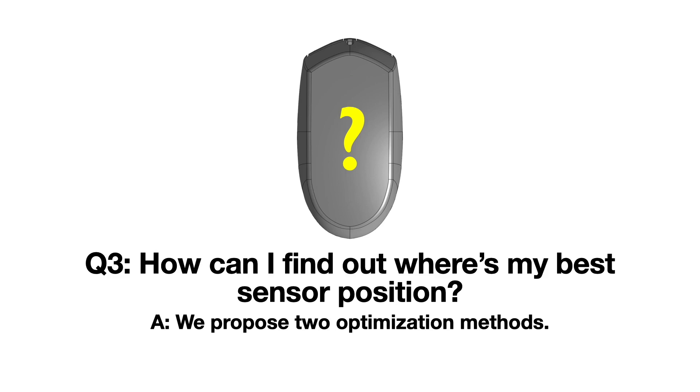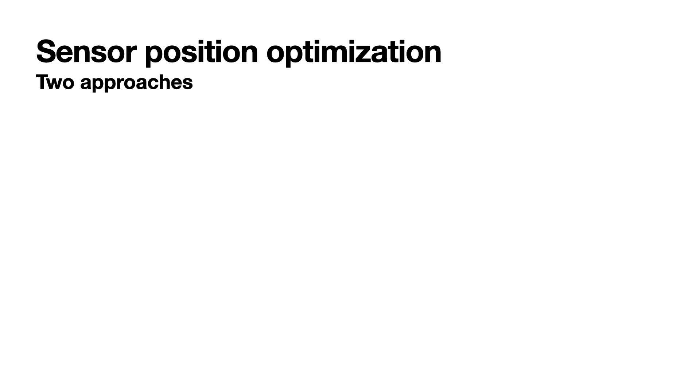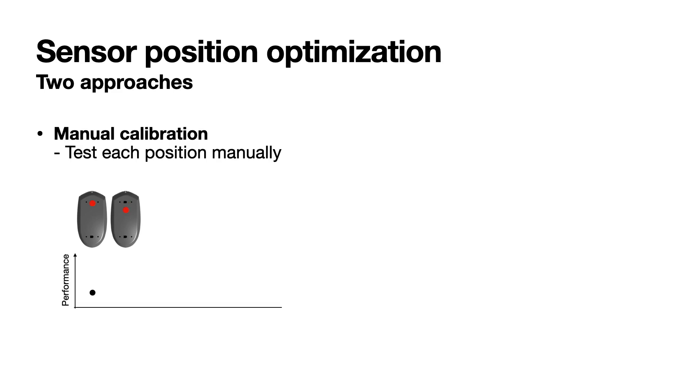The final question could be how can I conveniently find where's my best sensor position? We propose two approaches for sensor position optimization. First one is manual calibration. First, set a sensor to one position and measure the performance. Set the sensor position to another and measure again the performance. Set the third sensor position and measure, and so on. You can finally find the best sensor position. This method works, but it's tedious.